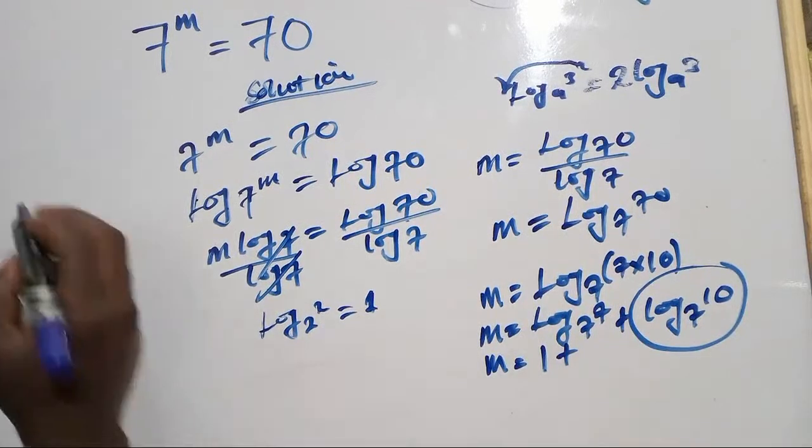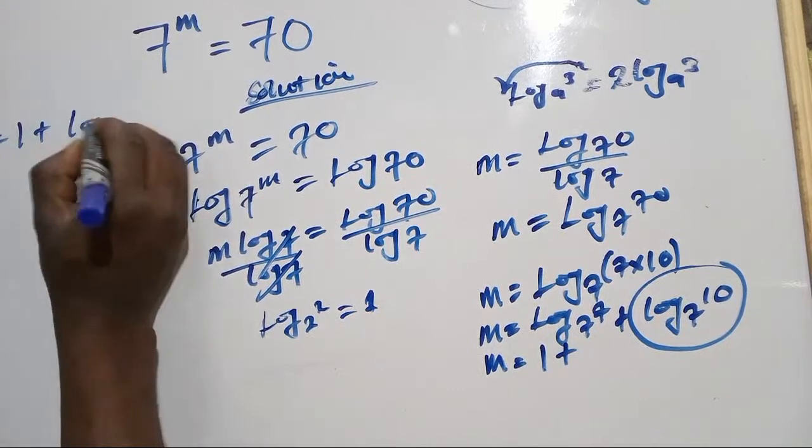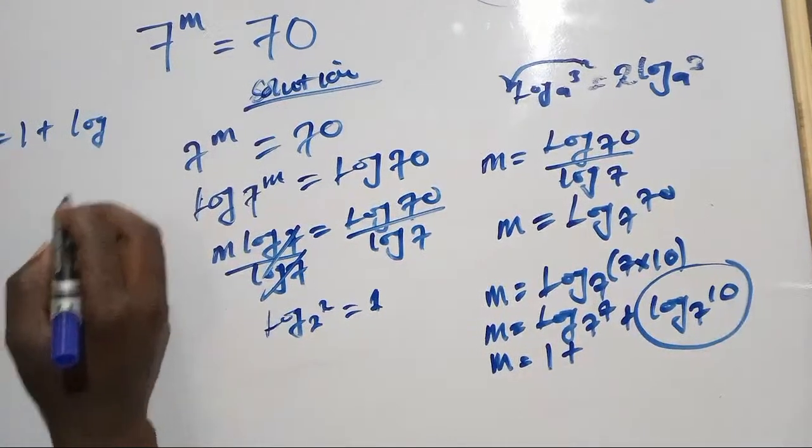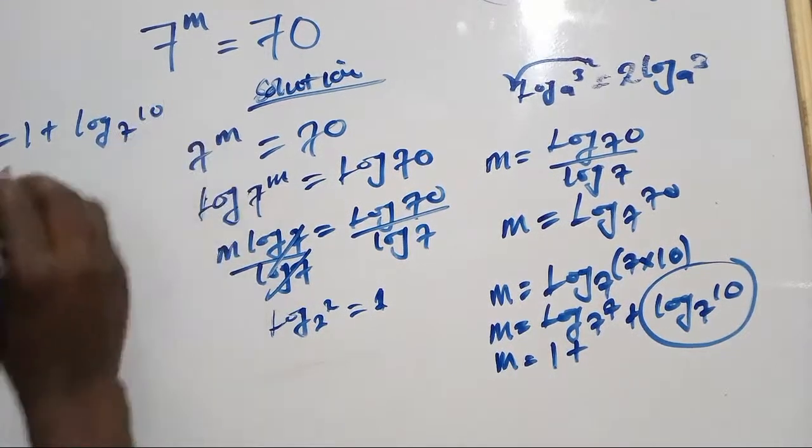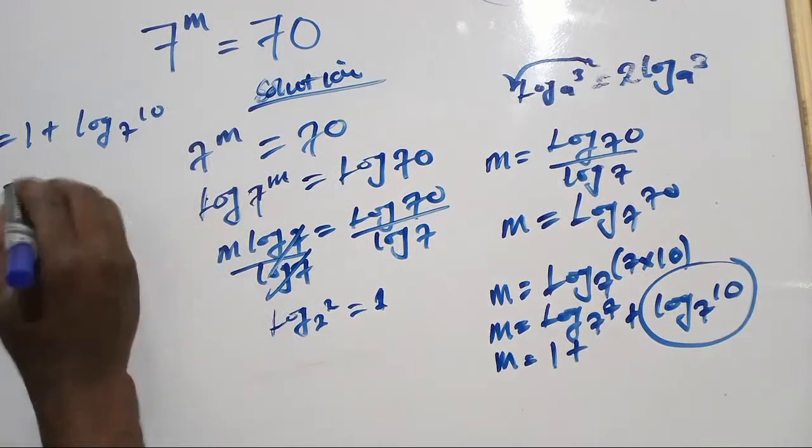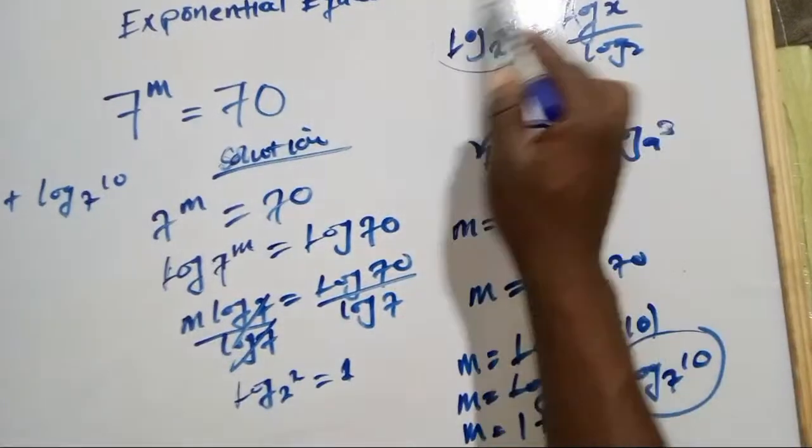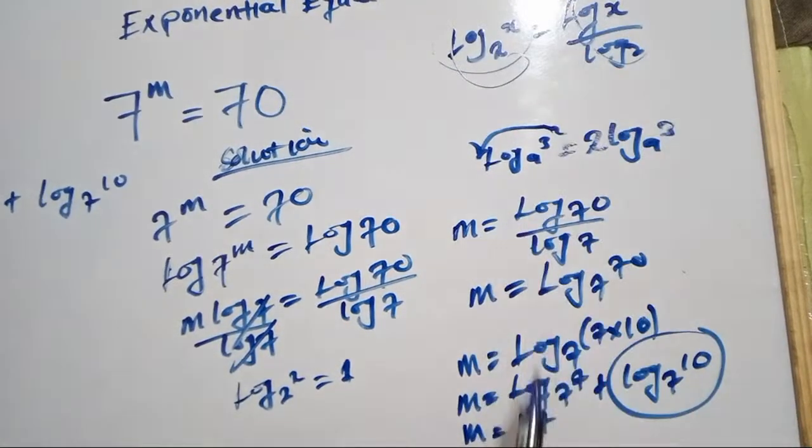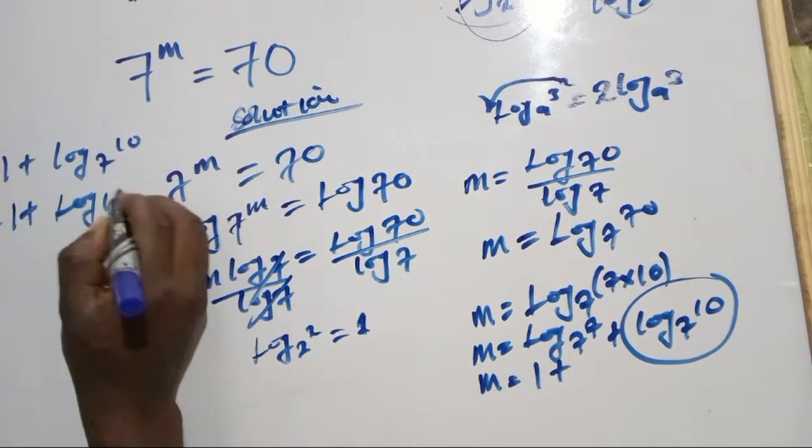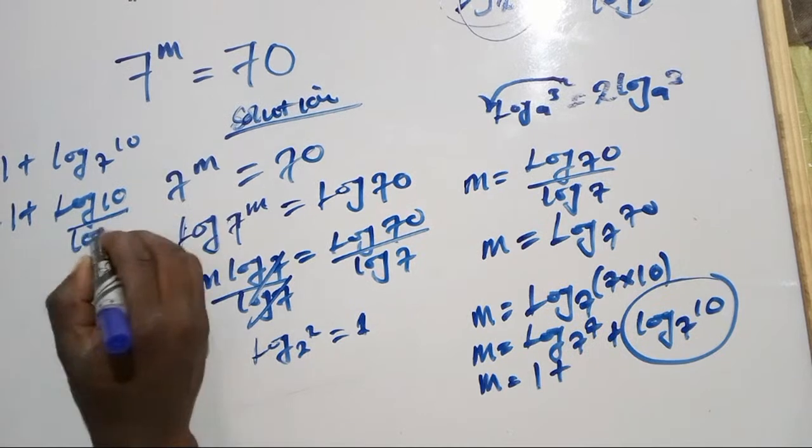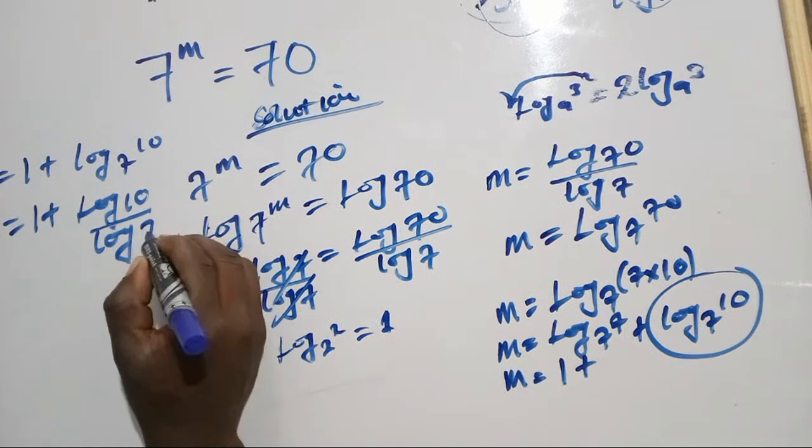We have m equals 1 plus log base 7 of 10. And like I said, whenever you are changing a logarithm, we have to change this back to the standard form, which it will be 1 plus log 10 over log 7.